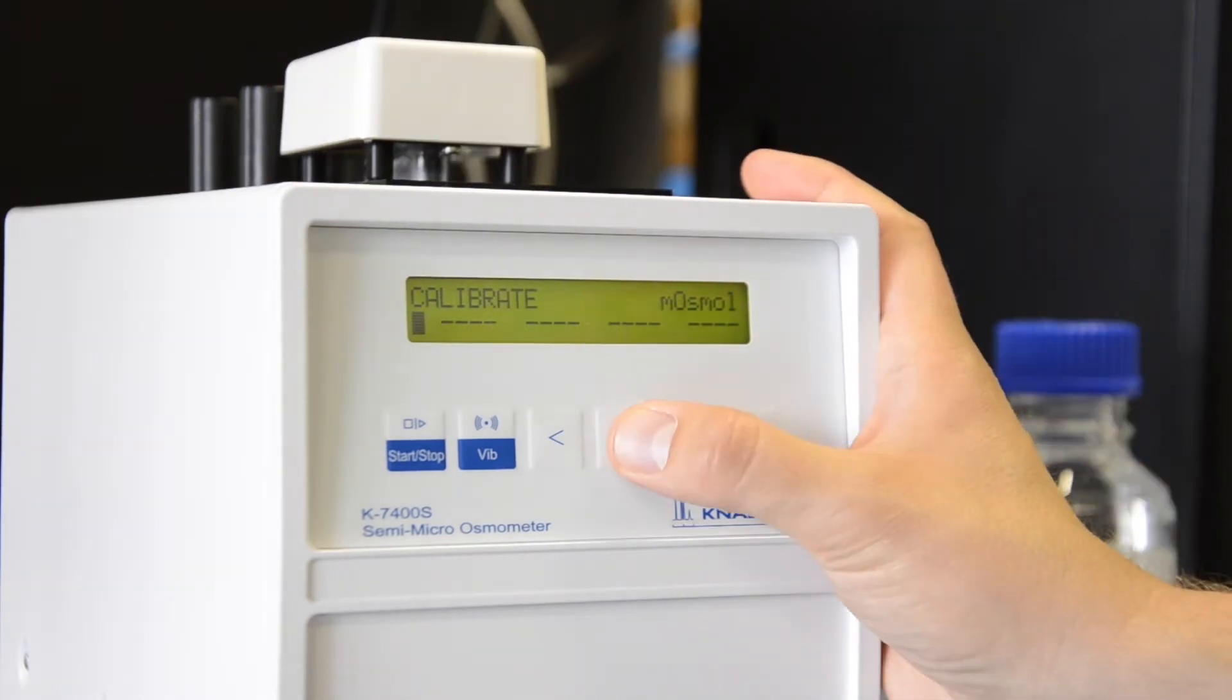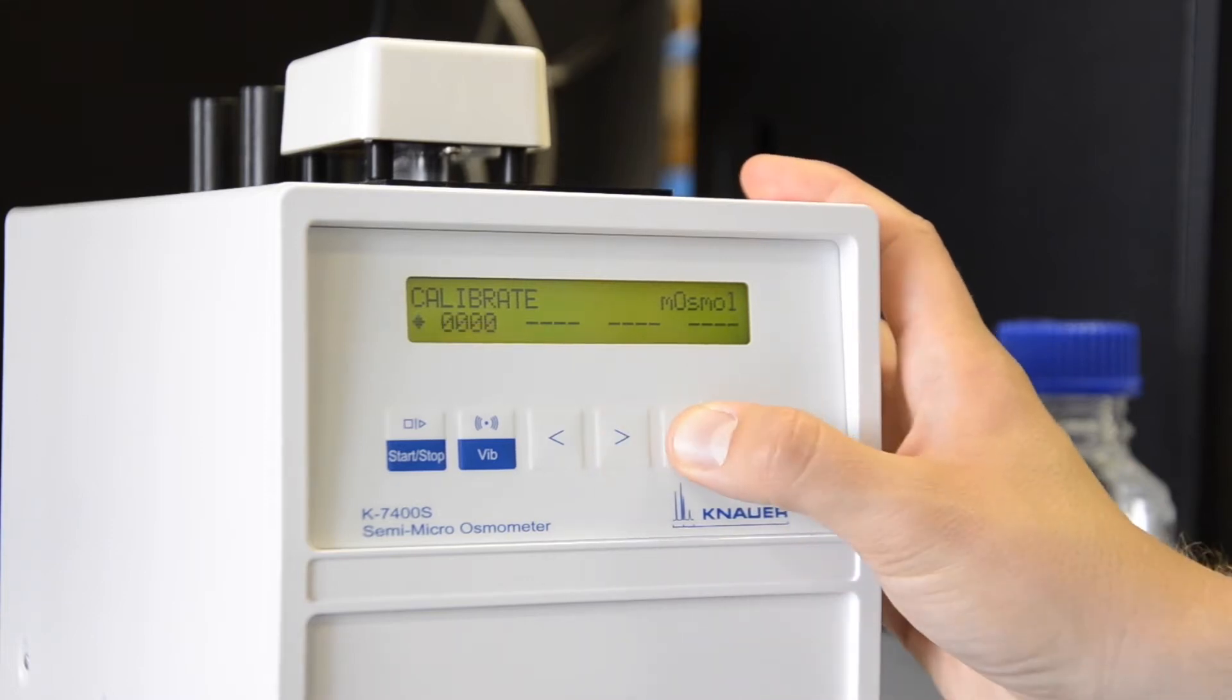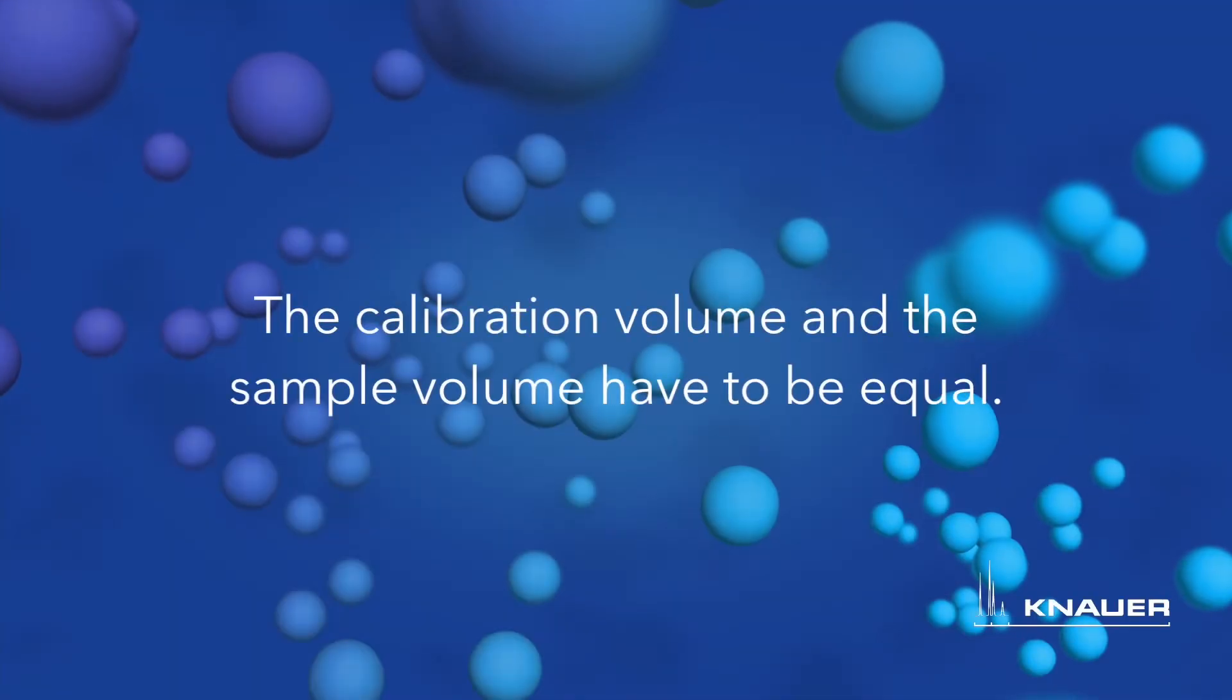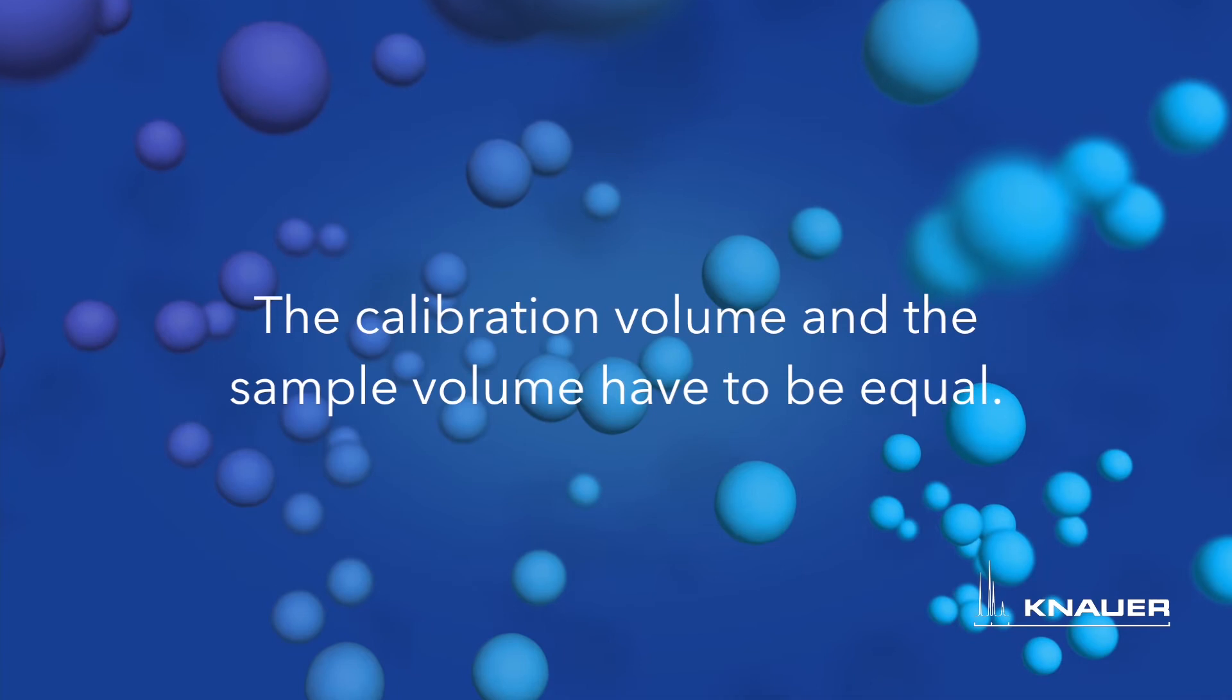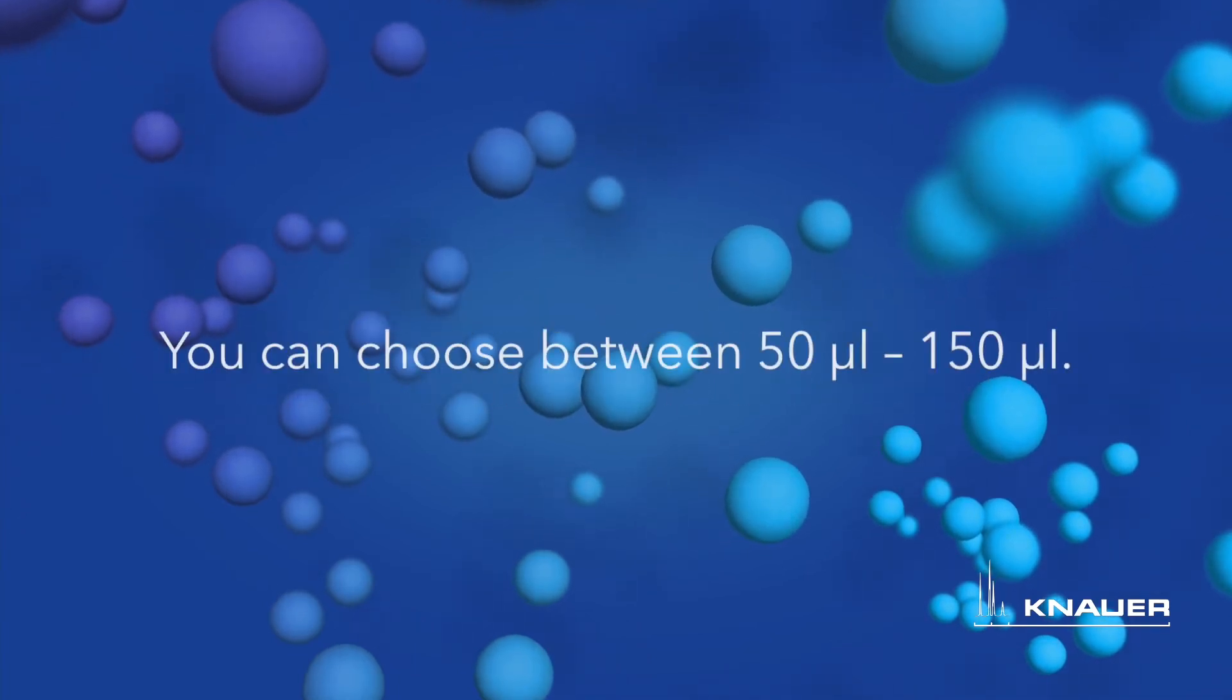Press the right button to select the first calibration point. Press the up button to set the calibration point to zero. To get reliable results it is essential that you use for this calibration the same volume that you are later using for your samples. You can choose freely between 50 and 150 µL.